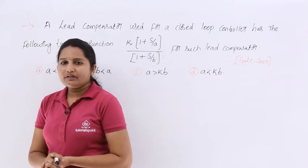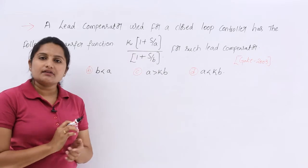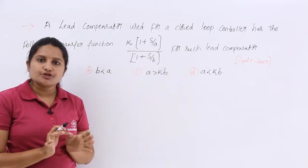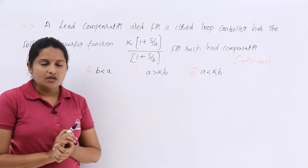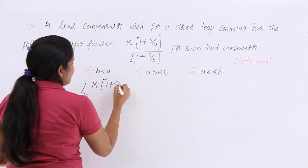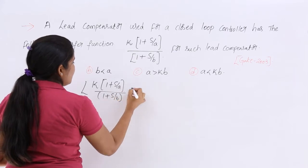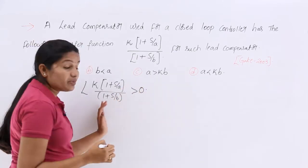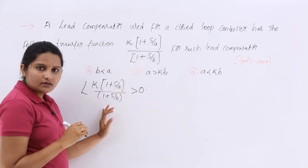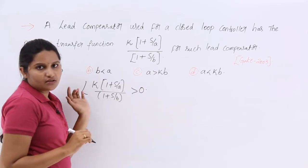Whenever you are given with this type of question, if this is your compensator transfer function, the angle of this transfer function should be positive. That means the angle of K times (1 + S/A) divided by (1 + S/B) must be greater than 0. This must be positive because this is a lead compensator. For a lag compensator, that angle may be less than 0, but here it must be greater than 0.